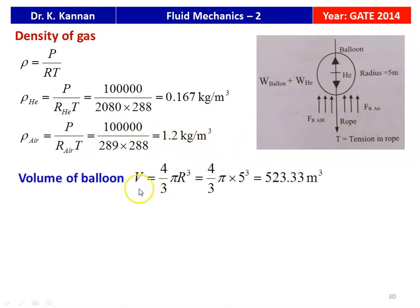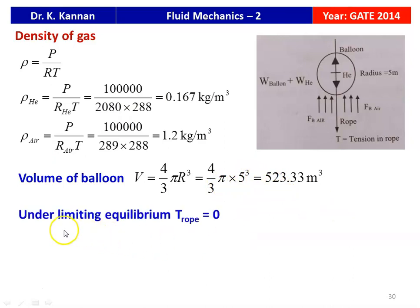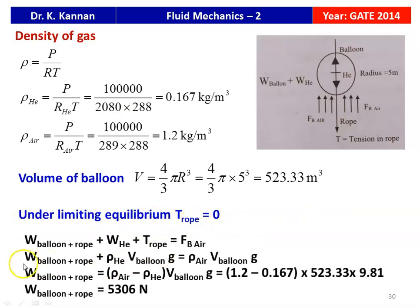Volume of the balloon V equals (4/3)πR³. So (4/3)π times 5³ equals 523.33 m³. Under limiting equilibrium, tension on the rope equals zero.